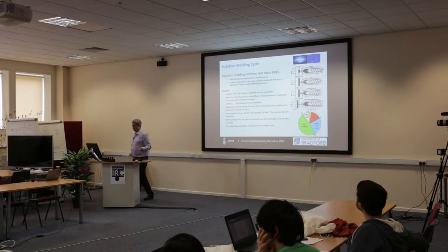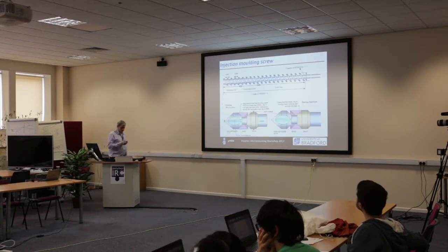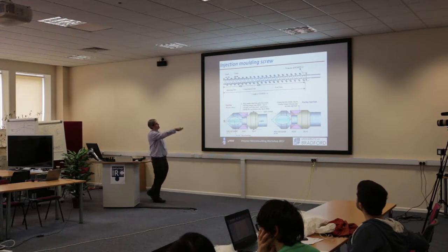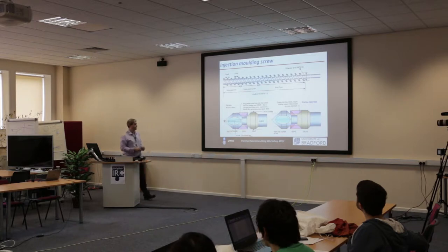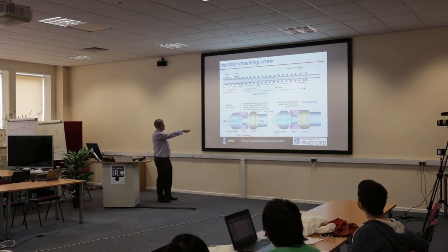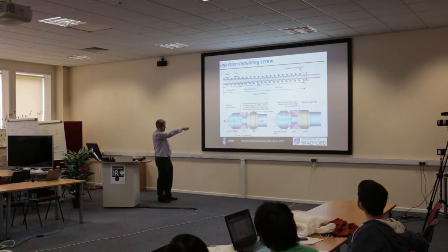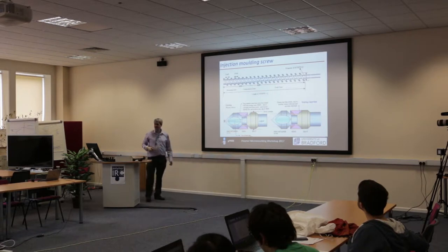The screw is very similar in design to extrusion screws, and we can choose different screws depending on the materials used — different compression ratios for different materials. The important bit is the check ring at the end. We have a ring of material around the end of the screw; as soon as we push the screw forward as a ram, friction forces this ring back to seal against a surface, preventing material from being forced back over the screw. This ensures a reliable positive displacement of injection into the cavity.